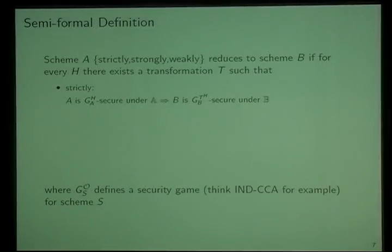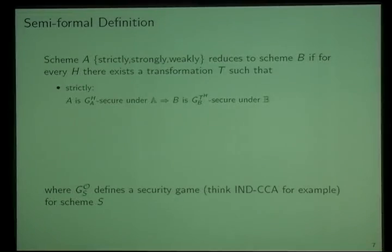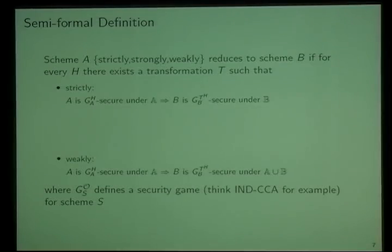Let's look at this in a more formal way. We say that scheme A reduces to scheme B if for every hash function there exists a transformation such that — and here's the first kind of reducibility — strictly, if A is secure under some set of assumptions, then B is secure using this very same hash function under a possibly different set B. This is very strong, as we will see. G defines a security game — for the sake of this talk you can think of this as, say, IND-CCA security game. We also propose a weaker notion which says: if scheme A is secure under A, then scheme B is secure under A and B — we allow that both sets of assumptions hold at the same time.